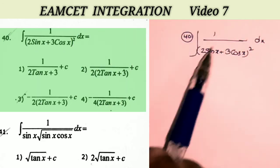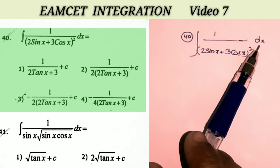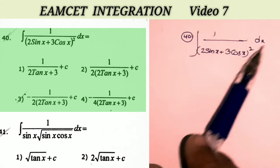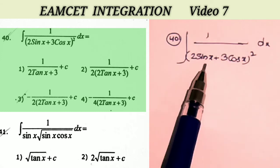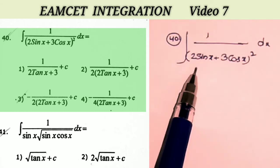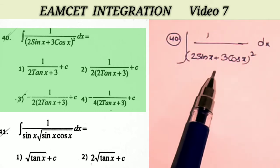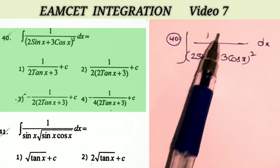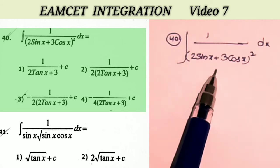Integral of 1 by (2 sin x plus 3 cos x) whole square, dx. We have the terms sin² x and cos² x at the denominator. The procedure is to divide the numerator and denominator by cos² x.